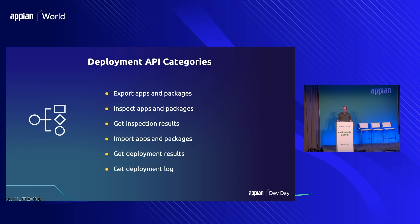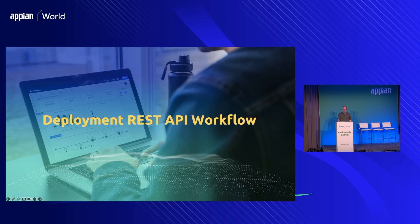The deployment APIs fall into these categories: export apps and packages, import apps and packages, get inspection results, get deployment results, and get the deployment logs. Pretty much everything you would need to export, import, and then review the logs either automatically or manually from your processes.